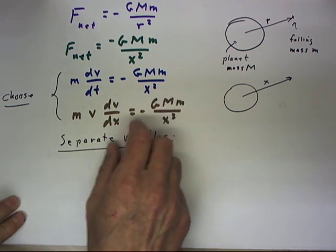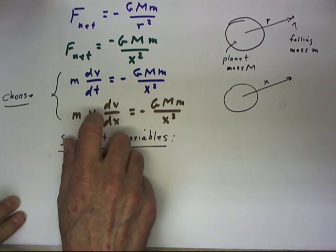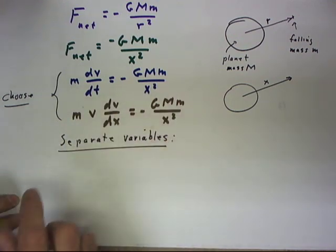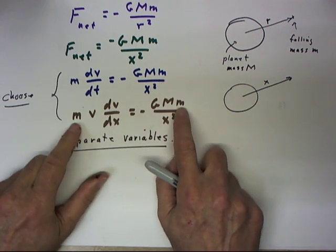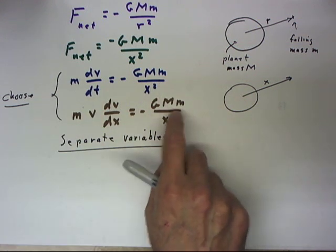We're going to have dX over X squared and we're going to have V dV over something else. And even more conveniently, our mass little m is going to divide out.